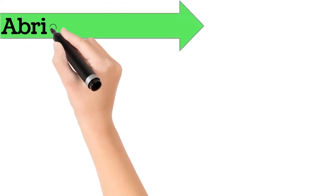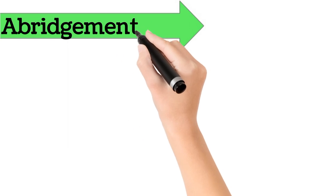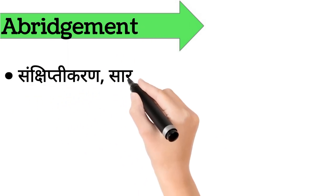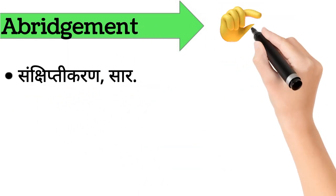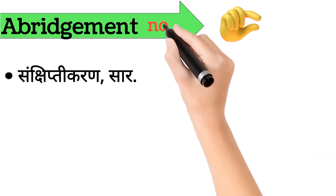Abridgement. Abridgement ka arth hai, sankshipt karan, saar. Abridgement word noun form mein aata hai. It's also called, shorten, reduction.